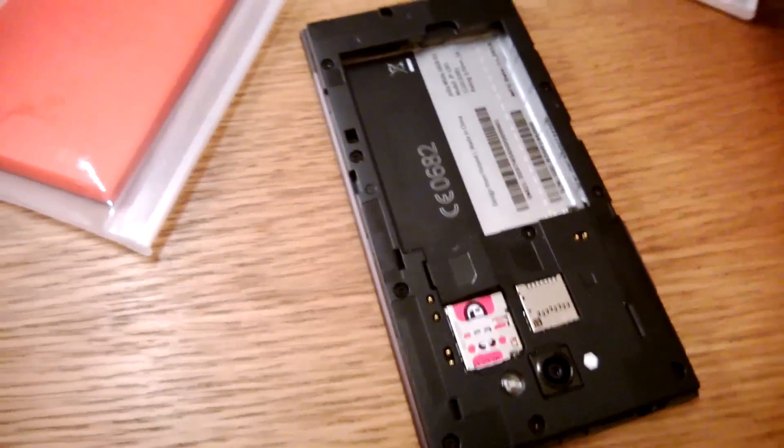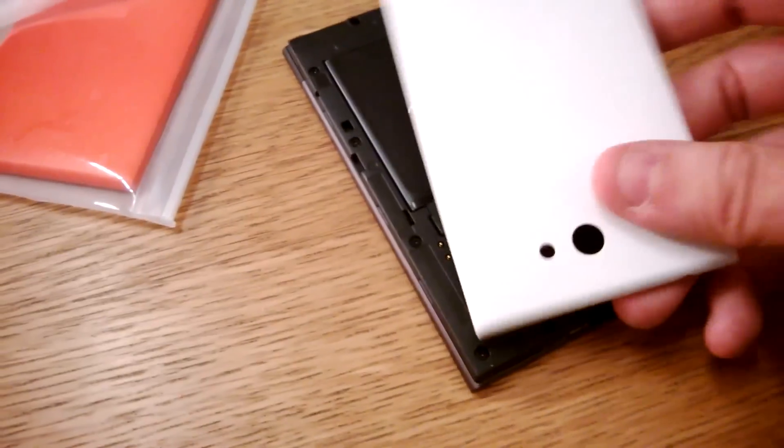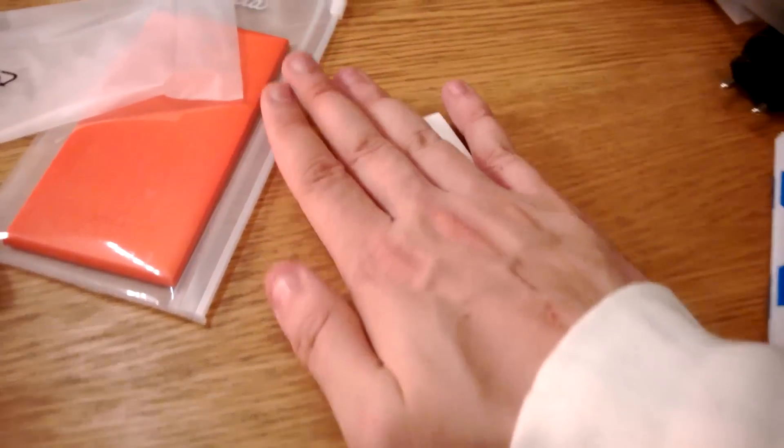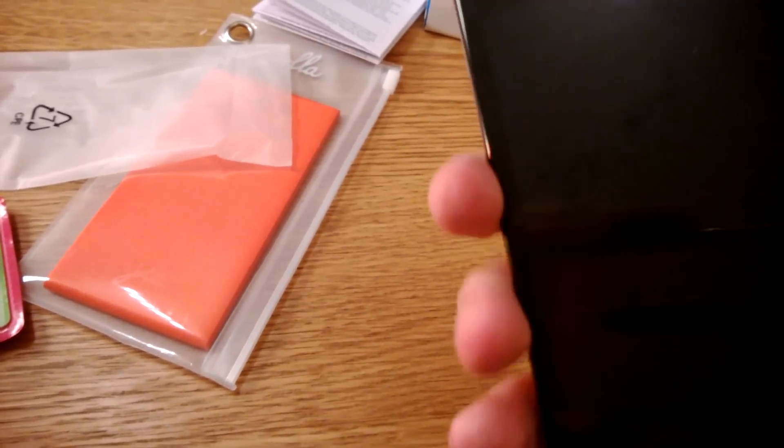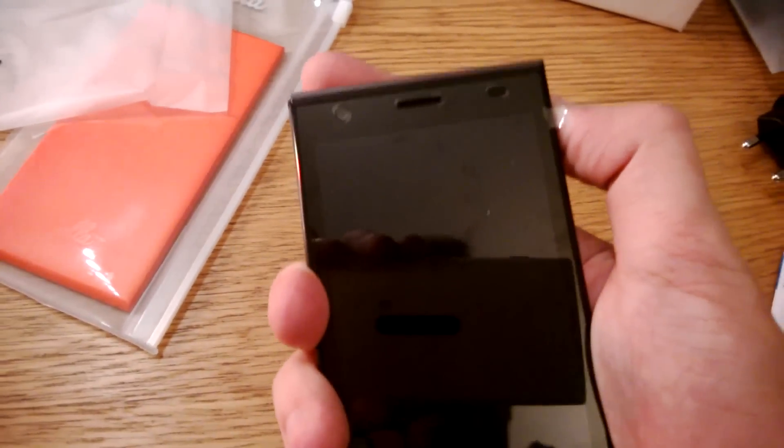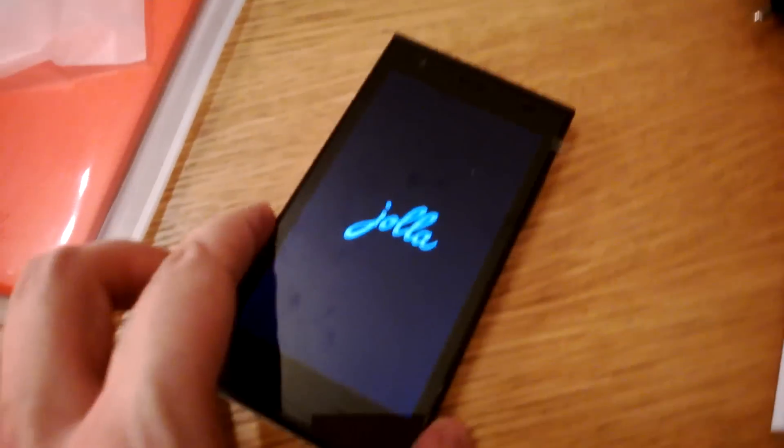And then inside the battery. And then the white other half. Okay. Where do you press? Press it on. Maybe this button. Yeah, something's happening. It's saying Jolla.